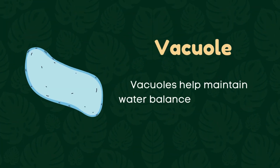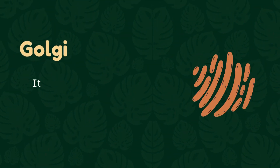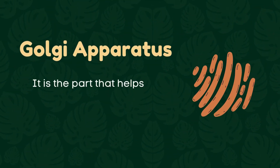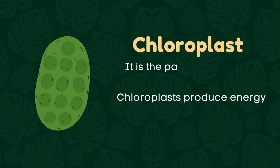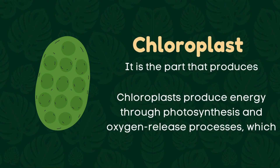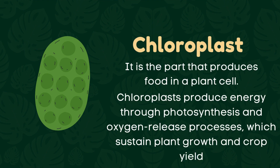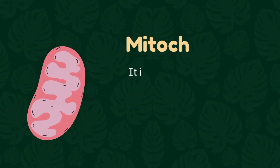Vacuole: vacuoles help maintain water balance in plant cells. Golgi apparatus: it is the part that helps process and package proteins and lipid molecules in the plant cell. Chloroplast: it is the part that produces food in a plant cell. Chloroplasts produce energy through photosynthesis and oxygen release processes, which sustain plant growth and crop yield.